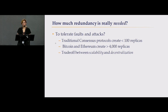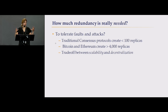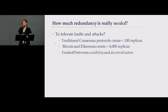In traditional consensus protocols like PBFT, the replication factor was usually set below 100 because you need to connect all nodes together and run heavy PBFT among them. In Bitcoin and Ethereum, we set the replication factor to 4,000 or even 5,000–6,000 nodes. Every message must touch many nodes, which causes high latency and poor scalability. So the question is: what is the correct number? How much redundancy is really needed so that a user's data is safe and live, but they're not paying for more than necessary?